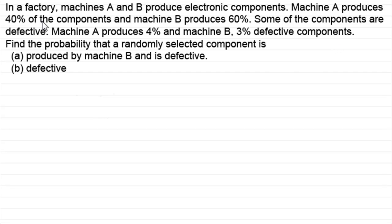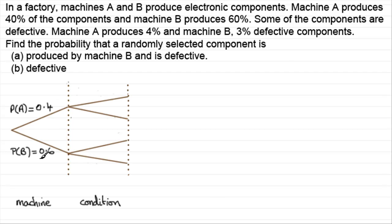We've got our two machines here, A and B, that produce electronic components, and each machine can either produce defective components or not. Your tree diagram should look something like this with two trials. The first trial is all about the machine — it could be A or B — with a probability of 0.4 going on A and 0.6 on B. Notice that these should add up to one.